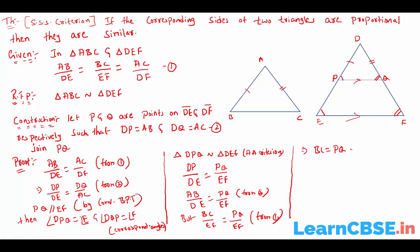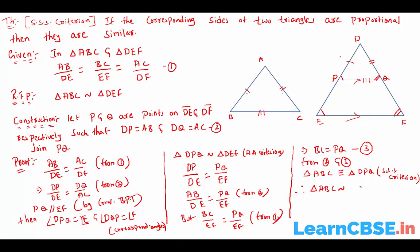Let this be equation 3. From equations 2 and 3, triangle ABC is congruent to triangle DPQ by the SSS criterion of congruence — Side Side Side. Since triangle ABC is congruent to triangle DPQ, and triangle DPQ is similar to triangle DEF, therefore triangle ABC is also similar to triangle DEF.